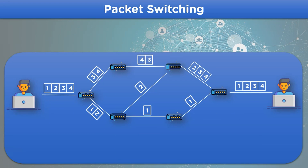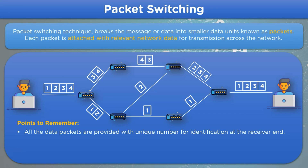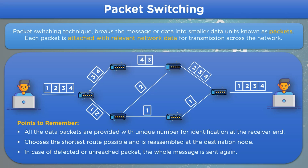Now let's look into some points to remember for packet switching. All data packets are provided with a unique number for identification at the receiver end — 1, 2, 3, and 4 in the previous example. Packet switching chooses the shortest path possible for the data to reach the destination. In case of an unreached or unattained packet, the whole message from the sender side is sent again to the receiver end.